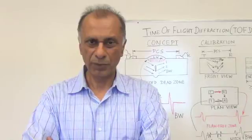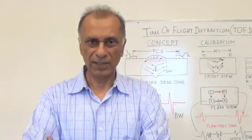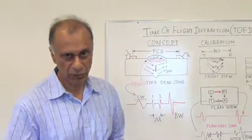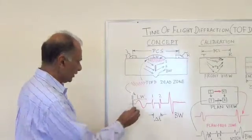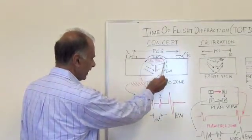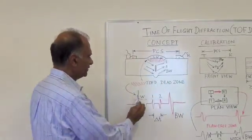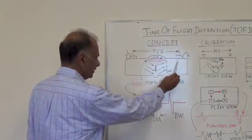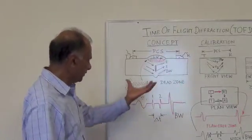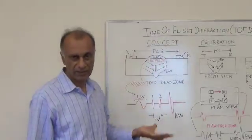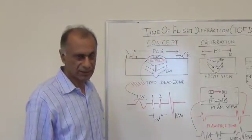TOFD consists of two probes with one placed on each side of the weld which is shown in this figure. So here the weld is right here, this is the weld cap, the weld root is here, the transmitting probe and the receiving probe. They are placed at a distance called PCS, which means the pitch catch separation distance.